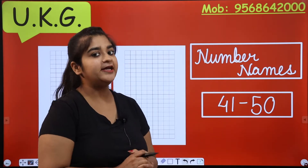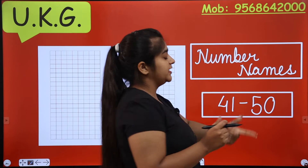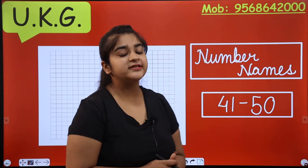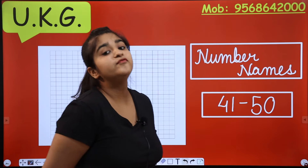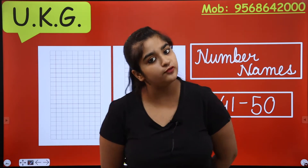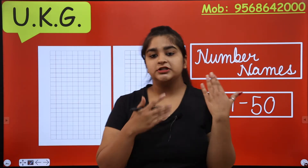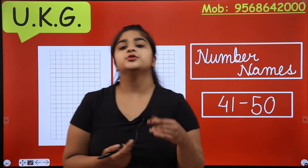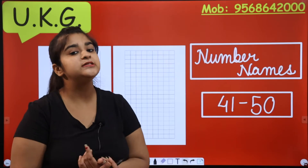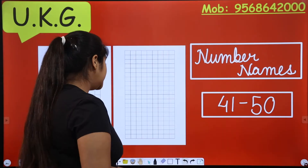Today we are going to do the work. We started from number names. We have learned names from 1 to 40. Now we will do 41 to 50. We already know the 40 spelling and we know 1 to 9, right? So 50 is also very easy.